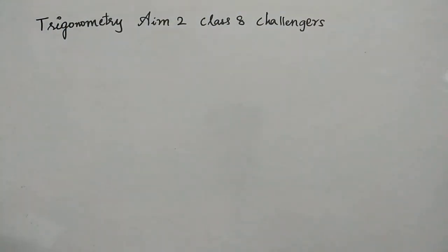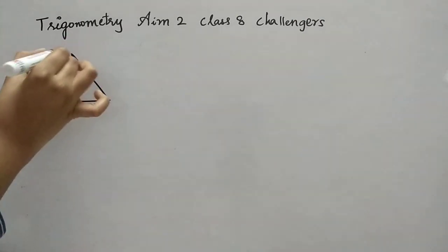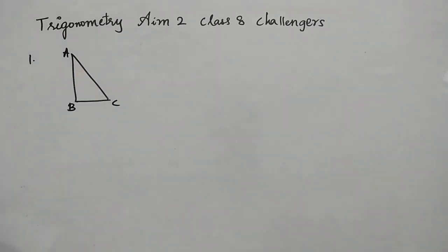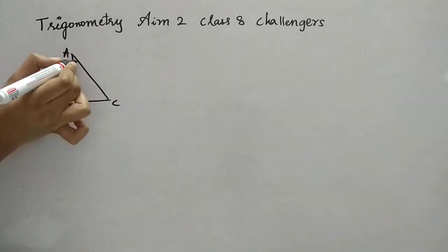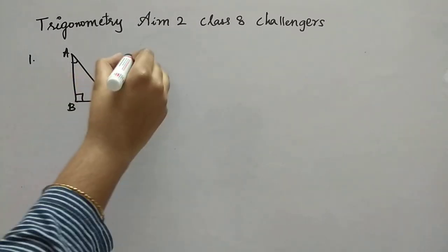First question, the first question says in a right angle triangle ABC. So first we have to draw one right angle triangle. This is a right angle triangle. Name it as ABC because they have told it in the question. A is acute and B is 90 degree and tan A is 5 by 12.